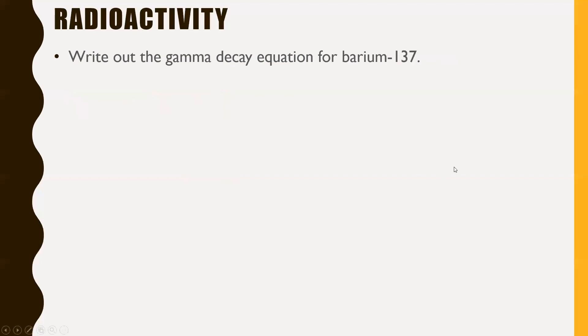Next one, gamma decay. Write out the gamma decay equation for barium-137. Give this one a try. So this one's kind of a silly question. This is actually the easiest one of the bunch. Gamma decay is probably the most silly one to even write out. Start by writing out barium-137. Barium has a symbol of Ba, 137 is of course your isotope number. If you look on your periodic table for your atomic number, you're gonna find that it's 56. Gamma decay has the most boring equation of all. It's literally what you started with, your arrow, and then what you started with again. No change in numbers whatsoever.